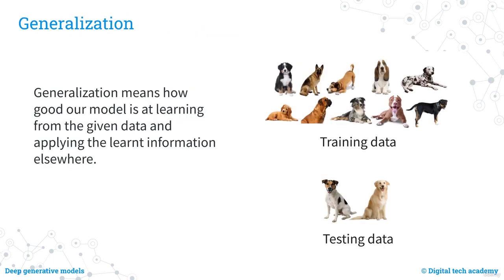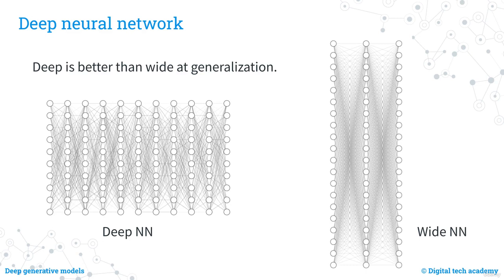It is also important for the network to generalise its learning to new data. For example, if we train a neural network to recognise dogs using a set of images, we want it to correctly recognise new images of dogs it has not seen before. Research has shown that deep neural networks — networks with many layers — tend to perform better in terms of generalisation than wide neural networks with fewer layers but more units per layer. This is why deep neural networks are widely used.